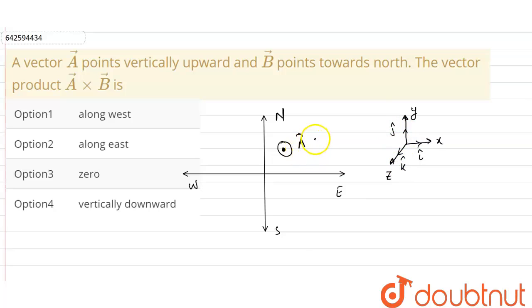Now the second vector, B vector, is acting towards north. So acting towards north, that is B vector, so it will be j cap.